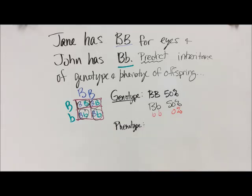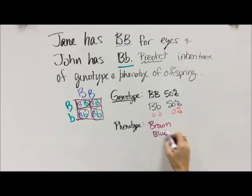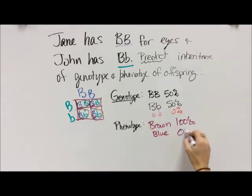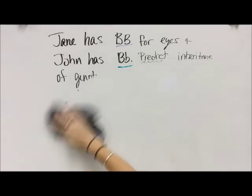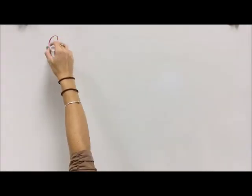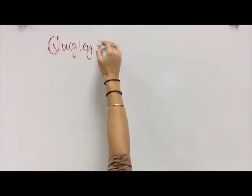We also have two big B little b's, and we have zero percent for little b little b — we always have to remember that zero percent can be an answer. For our phenotype, if we're looking at eyes, brown is dominant. All the boxes have at least one big B, so 100 percent of the kids are going to have brown eyes and zero percent will have blue eyes, even though two of them are carriers — just like John was — so 50 percent could be a carrier.